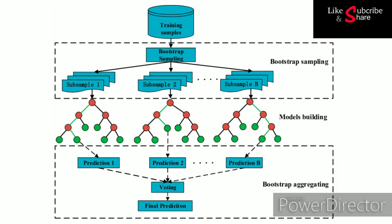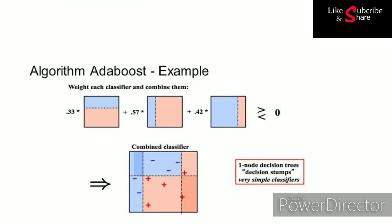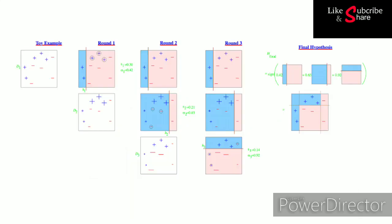Now coming to boosting. It is an algorithm in which we train in a sequential manner. We iteratively train the same base classifier, so the base classifier remains the same, but we put weights on the observations. The i-th classifier corrects the mistakes which were made by the previous classifier.